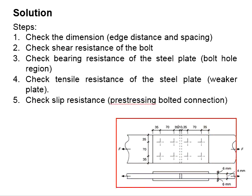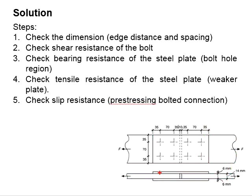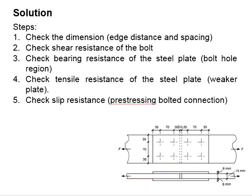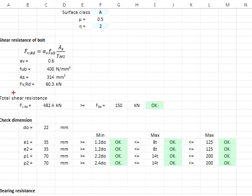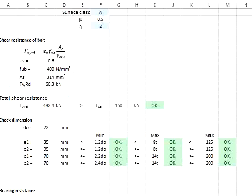From the diagram, every single bolt has two shear planes. There are four bolts installed on one of the plates, so the total number of shear planes equals 4 times 2, which is 8. This gives a total shear resistance of 482.4 kN for the connection.